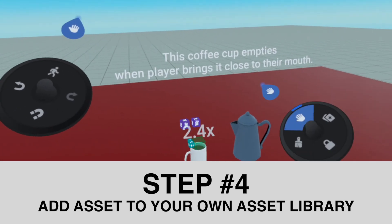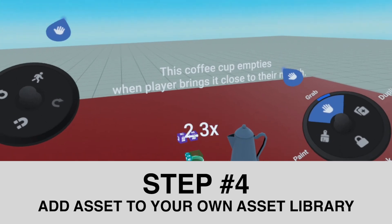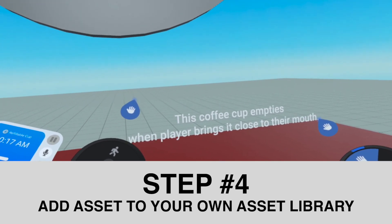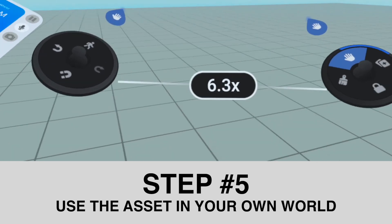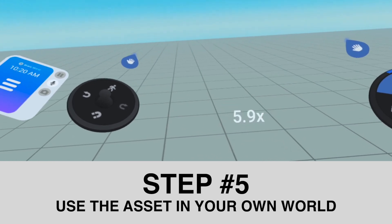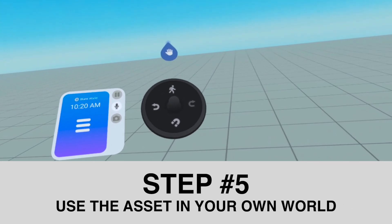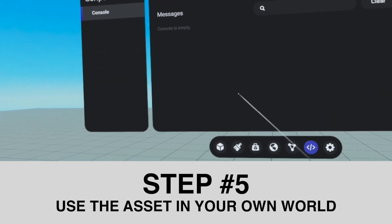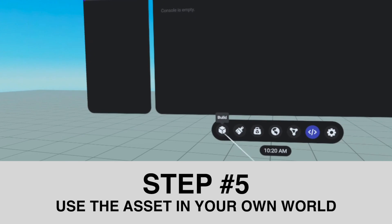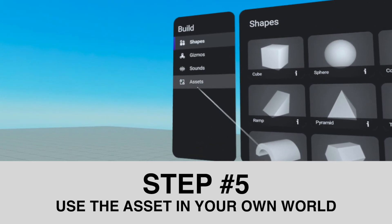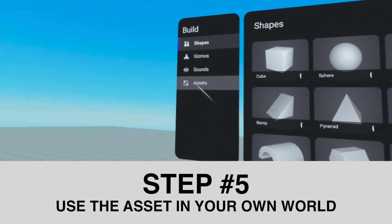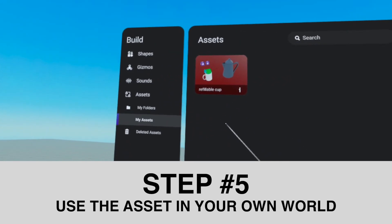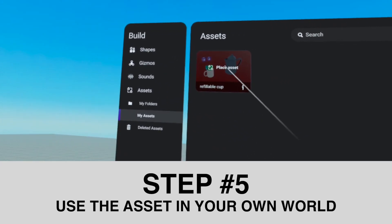Now let's go ahead and create a brand new world, and I'm going to show you how you can use this asset in your own world. I am in a brand new world in editor mode. I'll press the indented button on my left controller to go to my build menu. Under assets, you can access the assets that you created — here is the refillable cup.